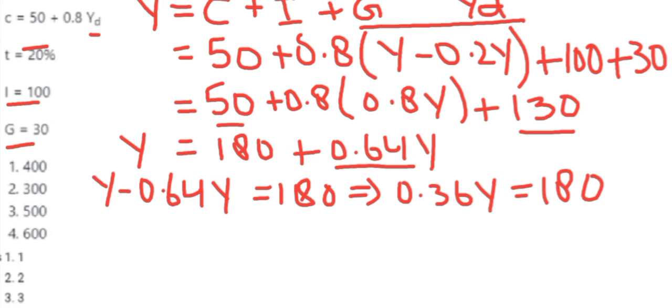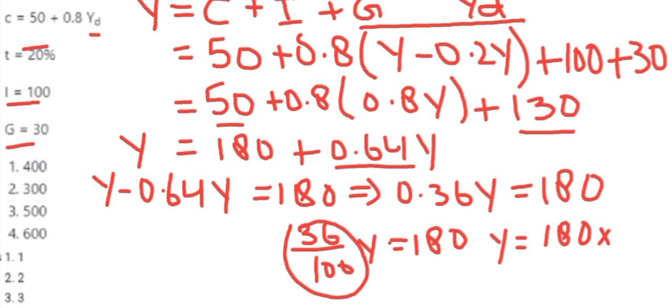Now 0.36Y equals 180. That is, 36 divided by 100 times Y equals 180. Or Y equals 180 times, when transposing this will get reciprocated, so this becomes 100 divided by 36.